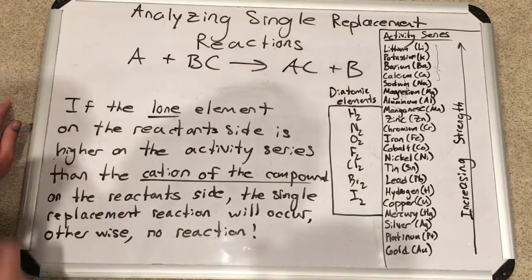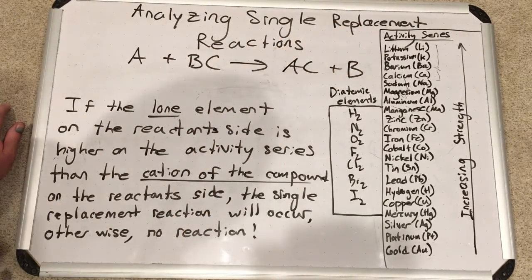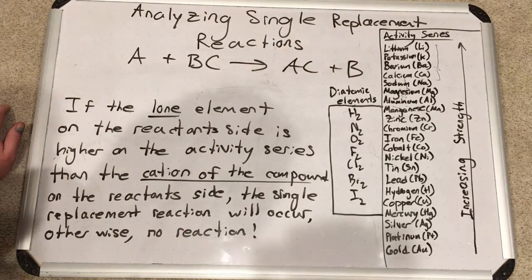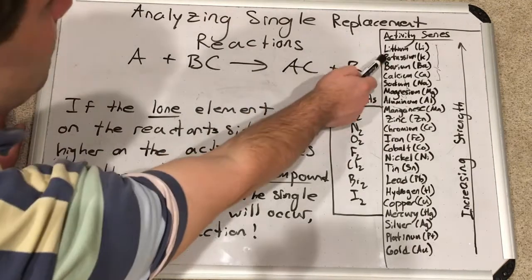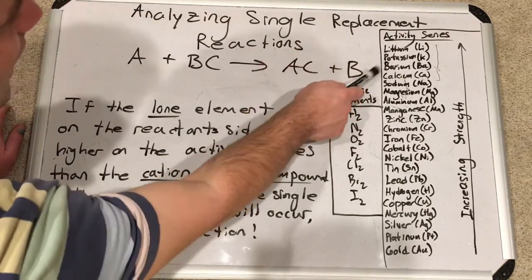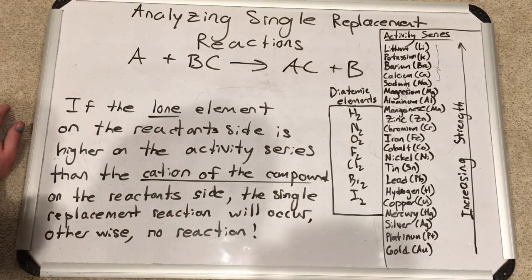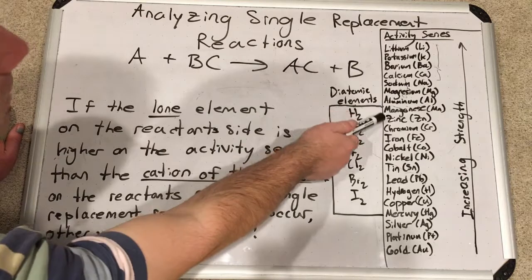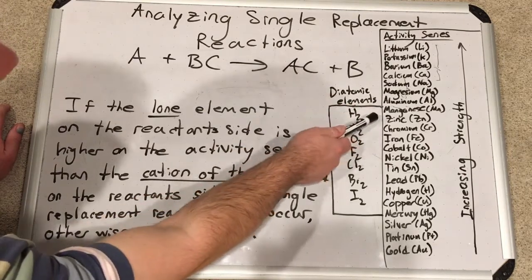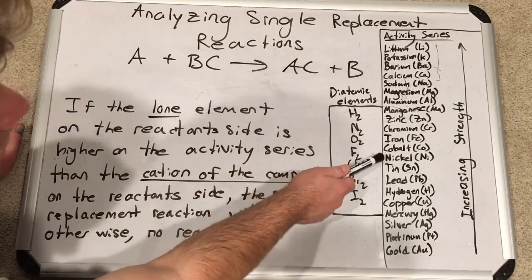So lithium is at the top of the list. Actually, you'll see a lot of the group one and group two metals at the top of the list. Lithium, then potassium, barium, calcium, sodium, magnesium. Those are all group one and two elements. Then we get some group three elements and transition metals: aluminum, manganese, zinc, chromium, iron, cobalt, nickel.